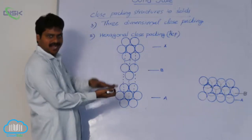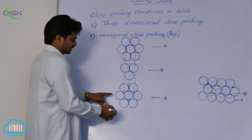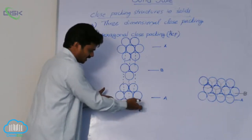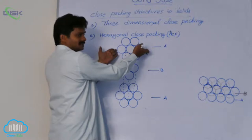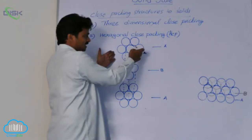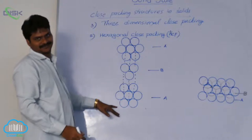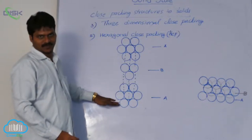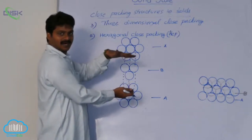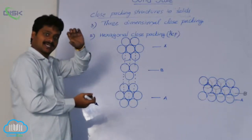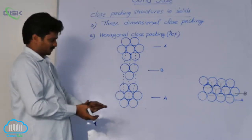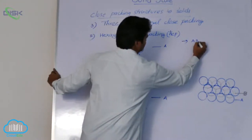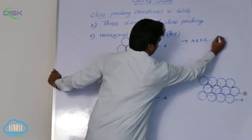If these three layers are stacked, see this arrangement. In this total arrangement, if the first is layer A, the second is layer B, and the third is layer C. But layer C is a repetition of layer A — meaning the third layer repeats the first layer. The spheres of the third layer are exactly aligned with the spheres of the first layer. That is why this hexagonal geometry has an A, B, A, B type layer structure.